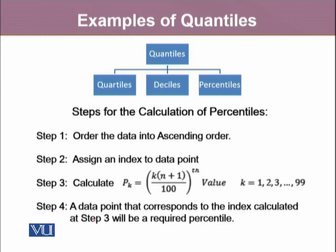For the calculations of a percentile, we take the first step where we order our data into an ascending order. In the second step, we assign an index value to each data point. In the third step, we calculate pk by substituting the value of k into this formula. And as the last step, the fourth step, we see that a data point that corresponds to the index calculated at step 3 will be a required percentile.